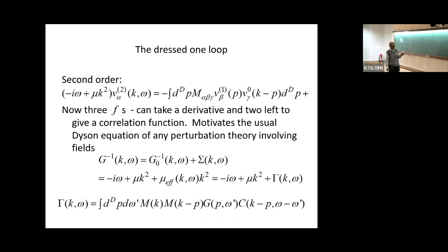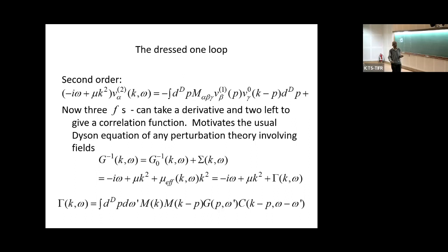At second order, V2 on the left has one first-order V and one zeroth-order V on the right. Taking a derivative with respect to F and then an average: V1 gives two V-zeros; one goes with F, leaving two more V-zeros, so three V-zeros total — one is consumed by the derivative, and two remain to form a non-zero correlation. So there is an answer at this level — a change in G-zero-inverse — which gives the full G(k,omega).